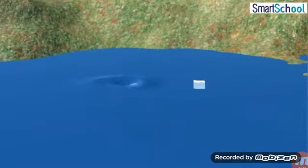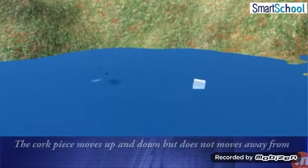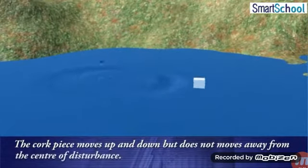If you put a cork piece on the disturbed water surface, it is seen that the cork piece moves up and down but does not move away from the center of disturbance.